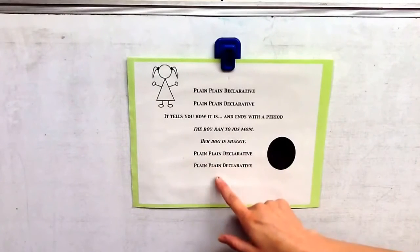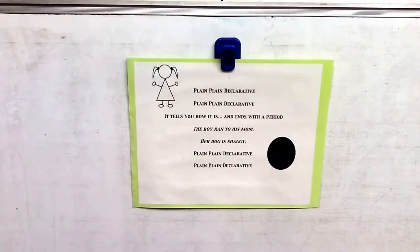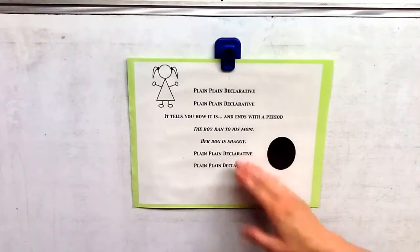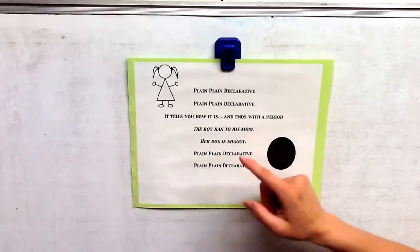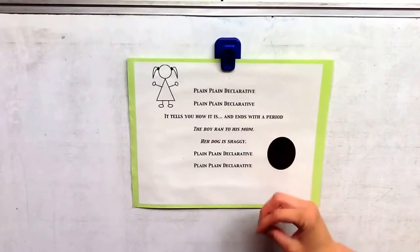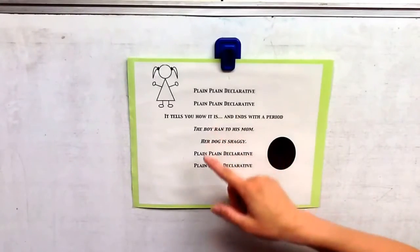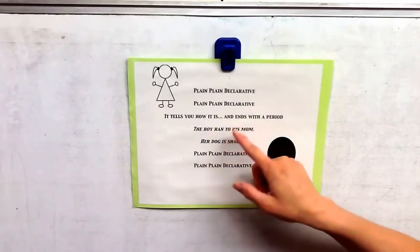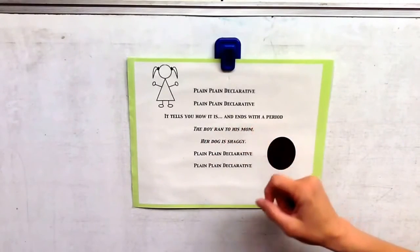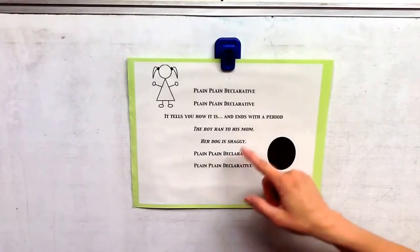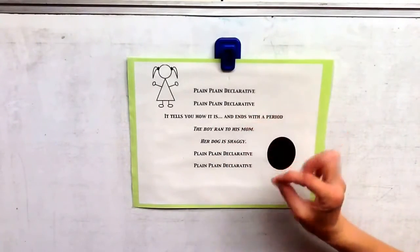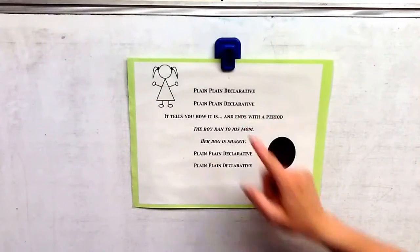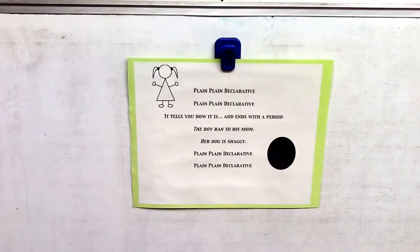Plain, plain declarative. Plain, plain declarative. So, boys and girls, here you can see two different types of sentences that give you examples of a declarative sentence. The boy ran to his mom. Her dog is shaggy. These sentences end with a period and they're telling us how it is.